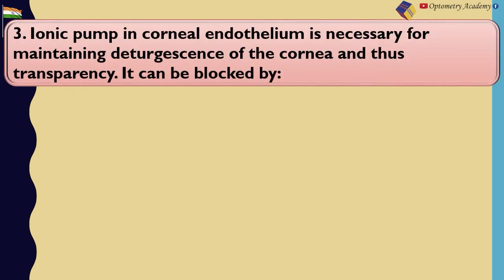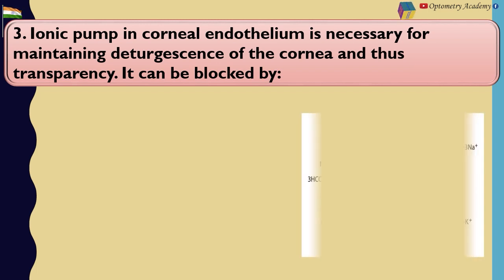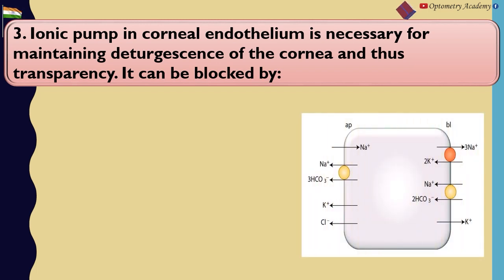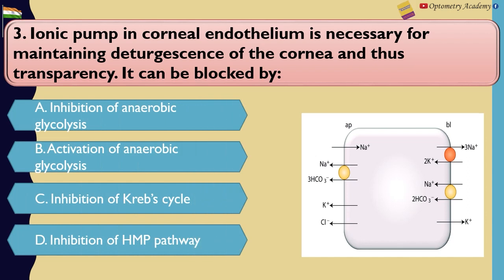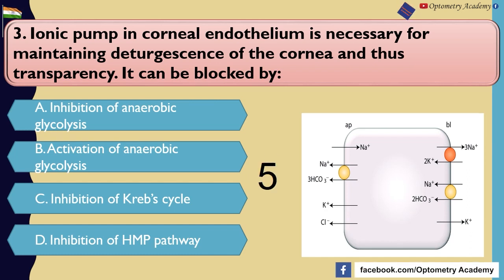Ionic pump in corneal endothelium is necessary for maintaining dehydration of the cornea and thus transparency. It can be blocked by: A. Inhibition of anaerobic glycolysis. B. Activation of anaerobic glycolysis. C. Inhibition of Krebs cycle. D. Inhibition of HMP pathway.